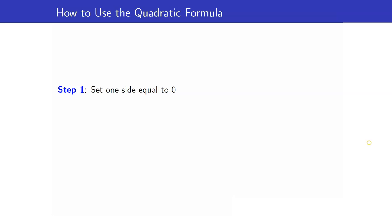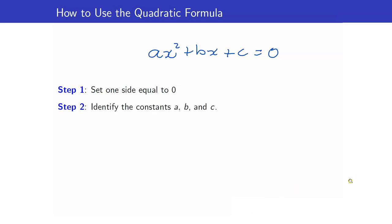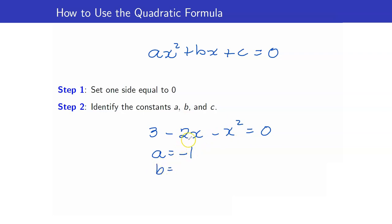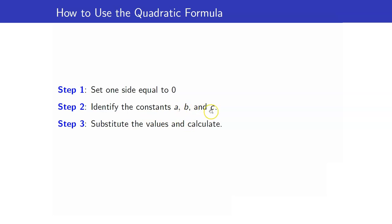Here are the steps in using the quadratic formula. Just like with solving by factoring, you have to set one side equal to 0 first, because you are starting with the equation of this form: ax squared plus bx plus c equals 0. Next, you identify the constants a, b, and c. Remember that a is the coefficient of x squared, b is the coefficient of x, and c is your constant. For example, if you're given 3 minus 2x minus x squared equals 0, don't just say that a is 3. Your a here is the coefficient of x squared, which is negative 1. Your b is negative 2, and your c is equal to 3. Once you have identified a, b, and c, you can substitute the values into your formula and calculate.